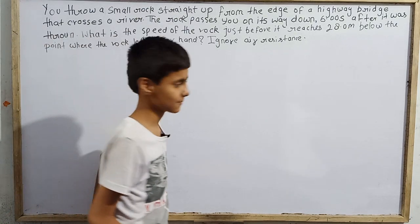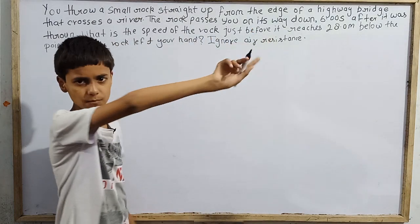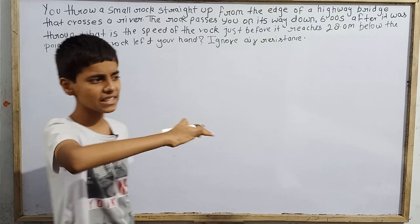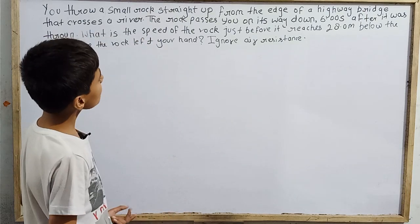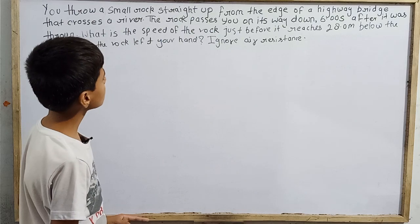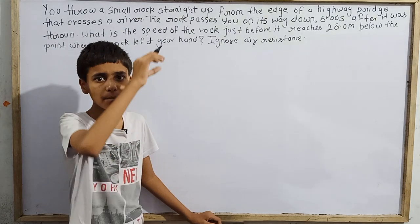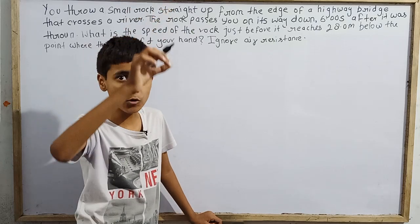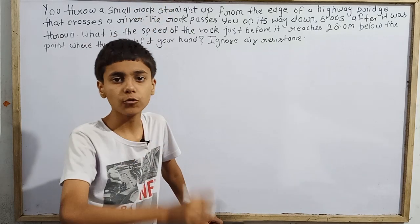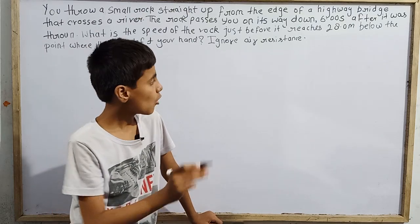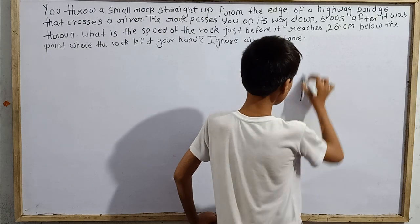This is the question. You pass a highway bridge, now there is a river flowing down. You are at the highway bridge and throw the rock straight up. After 6 seconds, after it reaches maximum height, 6 seconds after you throw it, it passes you going down.